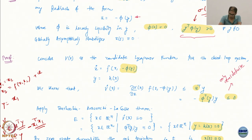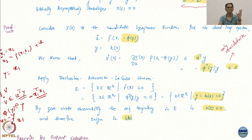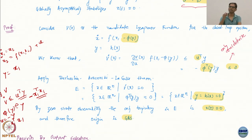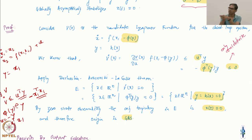Now we are ready to apply the Barbashin-Krasovsky-LaSalle theorem. Zero-state observability looks very much like the LaSalle invariance condition — because we started with a radially unbounded V but ended up with only a negative semi-definite V̇. In all such situations we invoke some version of LaSalle's theorem, whether the original LaSalle invariance or Barbashin-Krasovsky-LaSalle.